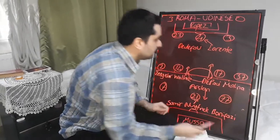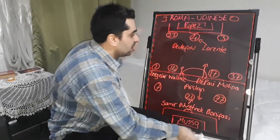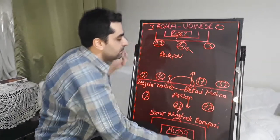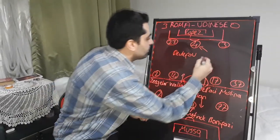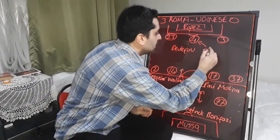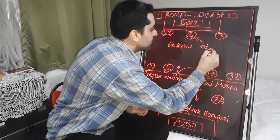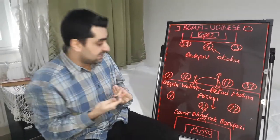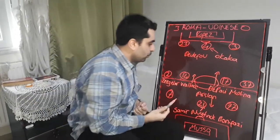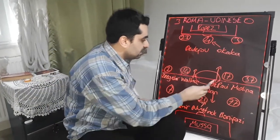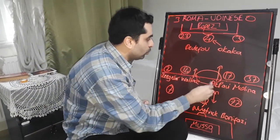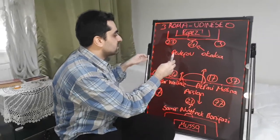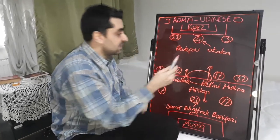Then Lorente came off up front and Okaka replaced him. After these substitutions, Udinese developed attacks through De Paul, and Derifou was very effective.